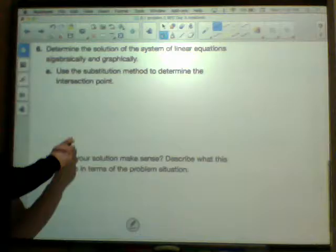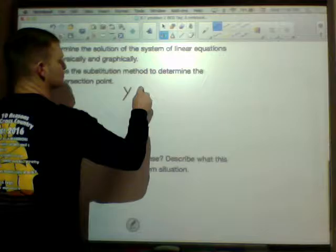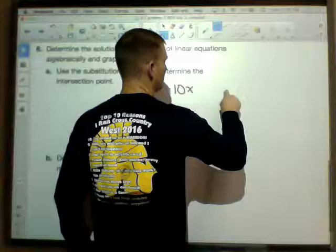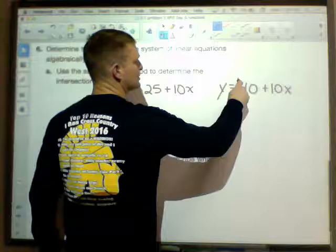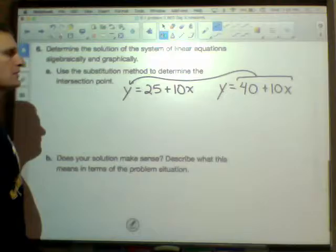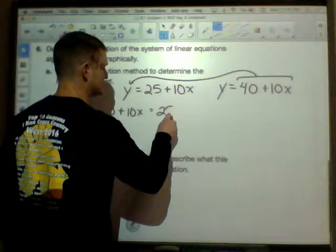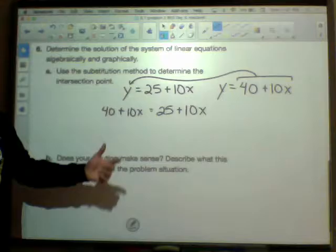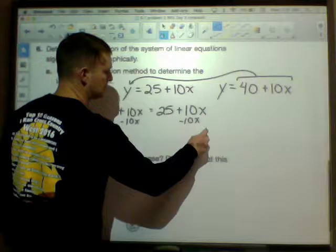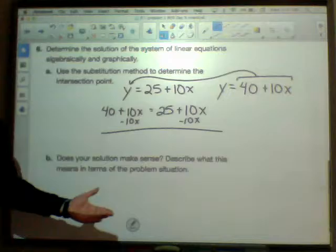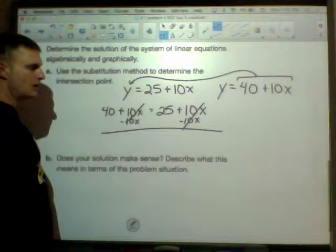Number six, determine the solutions of this system of linear equations both algebraically and graphically. It says use substitution method to determine the intersection point. Now this right here is the most important part of today. When we have a system, let's write our two equations: y equals 25 plus 10x and the other equation in the system is y equals 40 plus 10x. If we use substitution and we replace the y in the other equation with that 40 plus 10x, so I rewrite this as 40 plus 10x equals - and if you've been asleep, wakey wakey for this part because this is the most important portion of today's lesson. What happens when we solve this system when we have identical slope or identical coefficient to x?